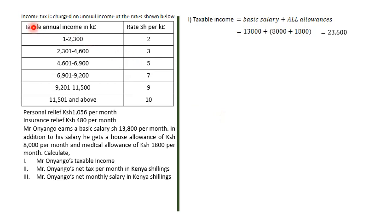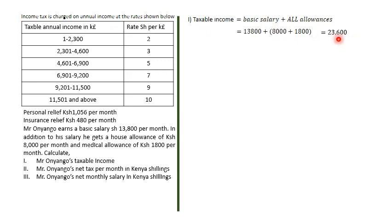The table heading shows taxable income in Kenya pounds per annum. So to use the table, we need to convert our monthly shillings figure to Kenya pounds per annum. We divide by 20 and multiply by 12 to get 14,160 pounds per annum.